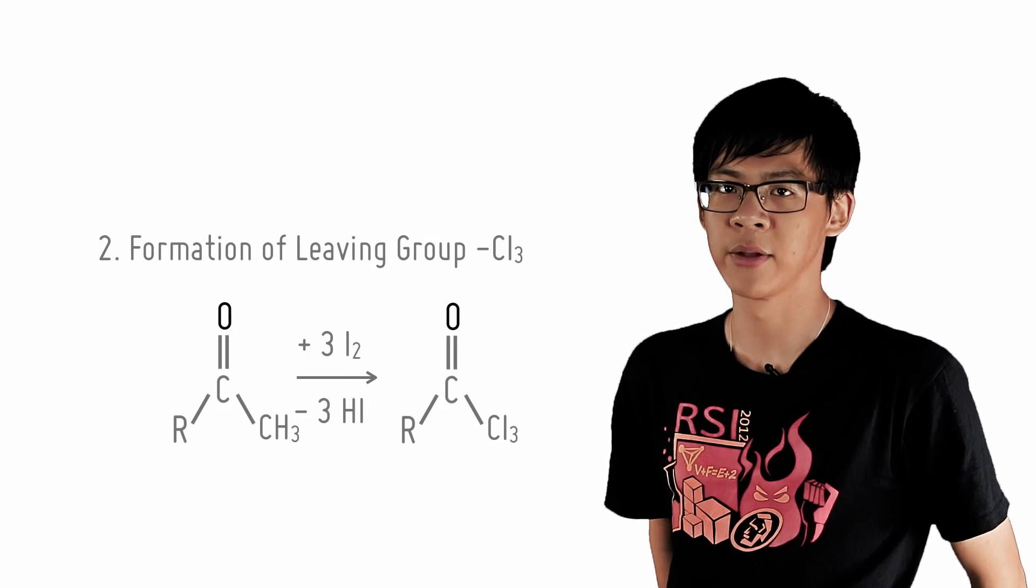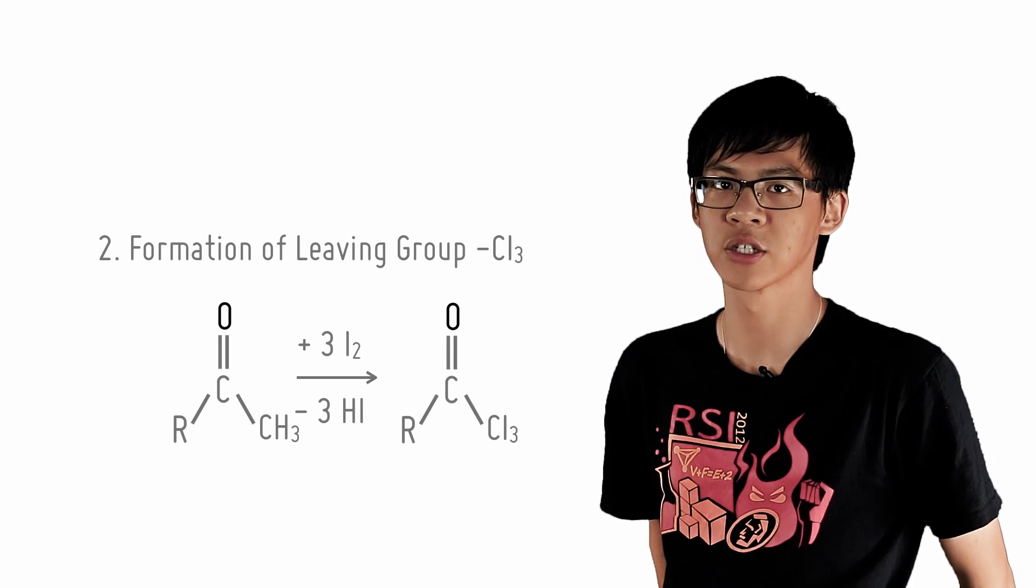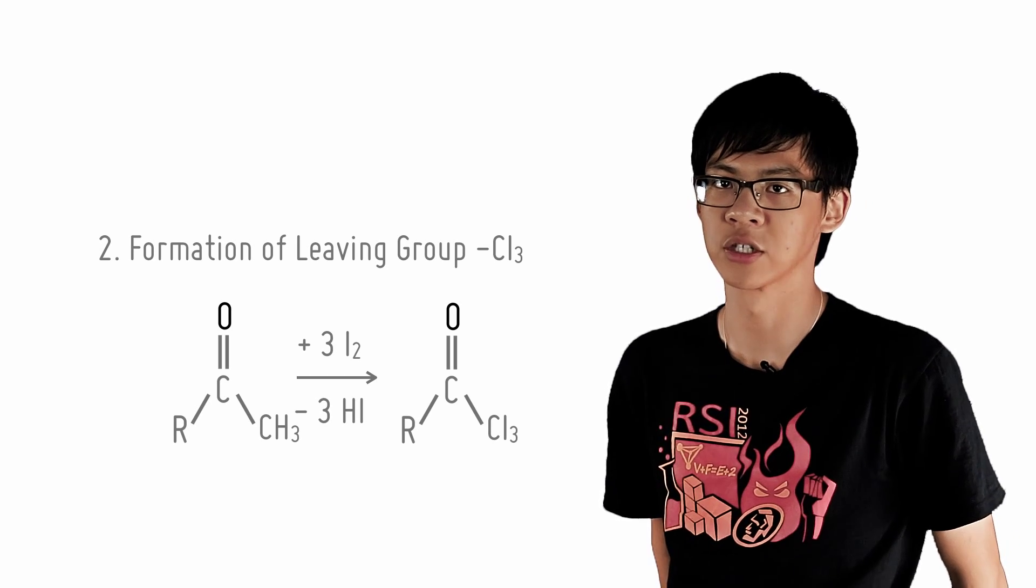The methyl ketone is subsequently iodinated 3 times to form the good leaving group CI3. It is a good leaving group because the electronegative iodine atoms withdraw electron density.